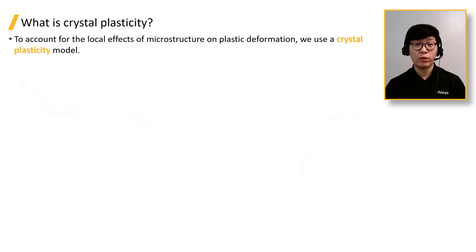Then, we can begin to introduce crystal plasticity. To account for the local effects of microstructure on the plastic deformation, we use a crystal plasticity model. It uses information of each grain in the microstructure, including the crystal type, grain shape, and crystal orientation.